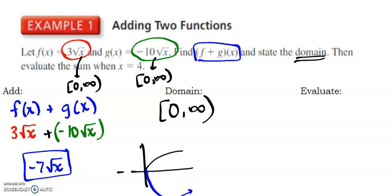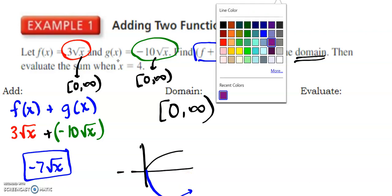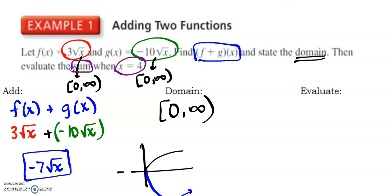Then it says to evaluate. So it says to evaluate the sum when x is 4. My evaluating will be -7 times the square root of 4. Well, that's really -7 times 2, which is -14.